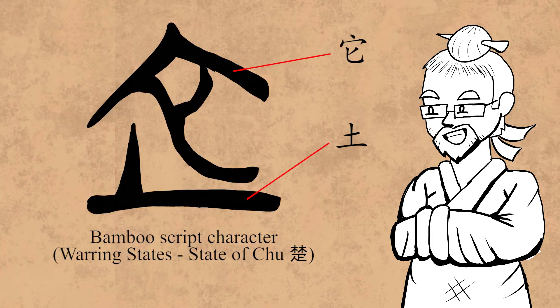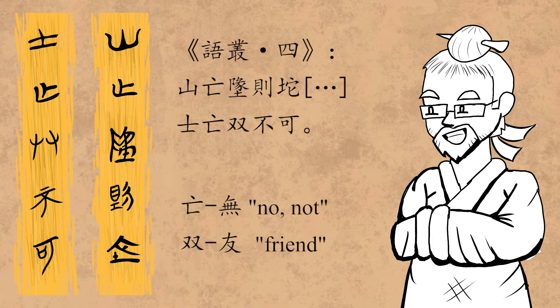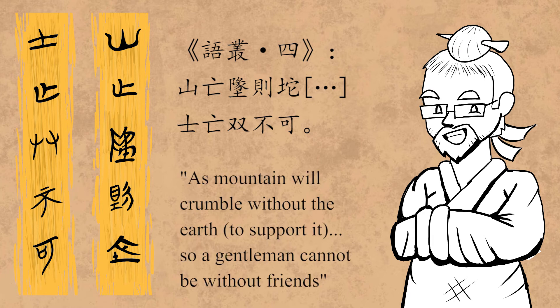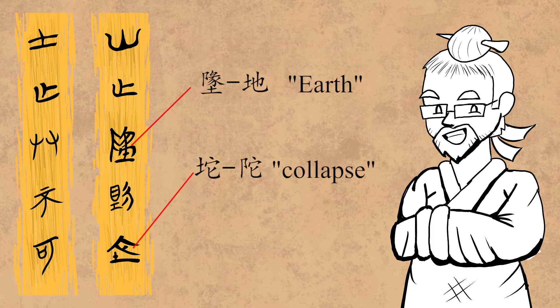It's good to note that a glyph that looks like the modern character 地 is also found in these texts. However, from the context of the text, it seems to have been an early version of 陀, meaning collapse. I refer once more to the 语丛: 山无地则陀，事无友不可 — as a mountain will crumble without the earth to support it, so a gentleman cannot be without friends. Note that 地 also appears in this very sentence, eliminating any doubt that these are in fact two different words altogether.